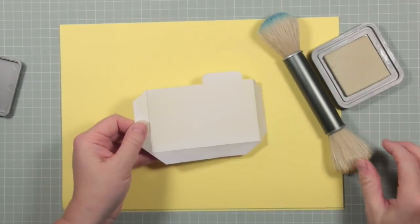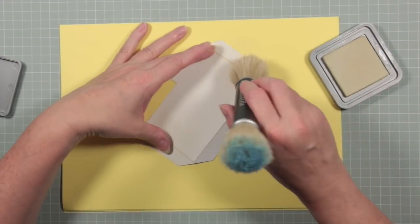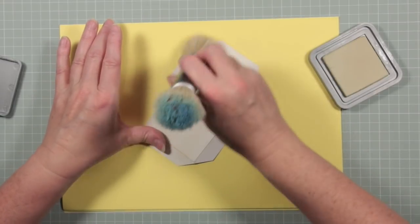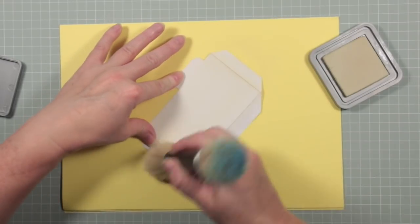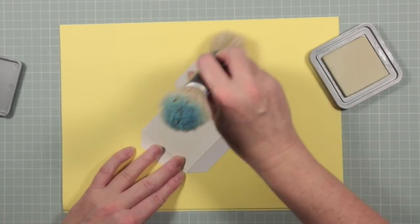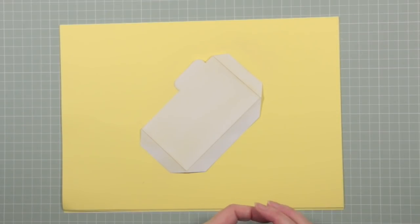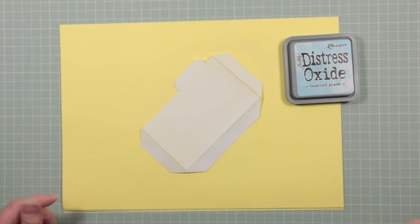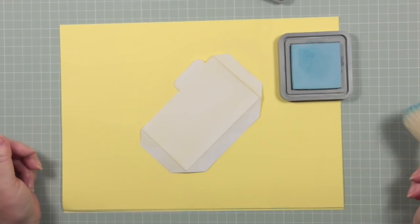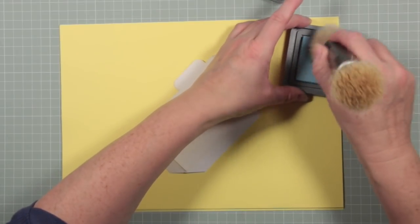The blue that I'm using is Tumbled Glass. I love this color. It's a beautiful, light sea effect color. It's like sea glass or something. It's really lovely.